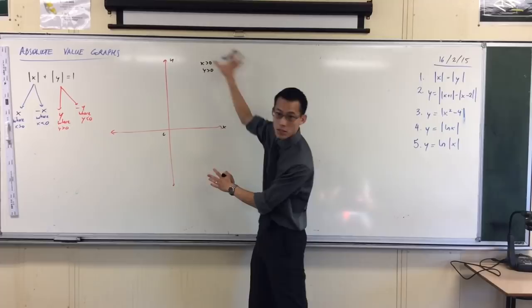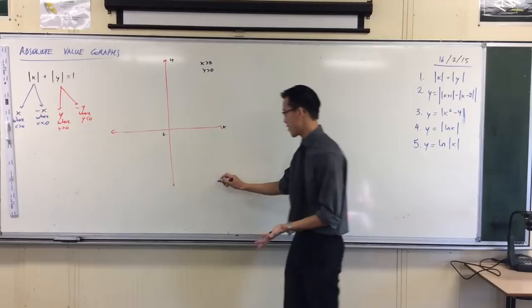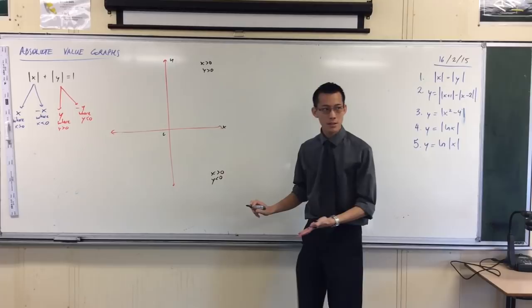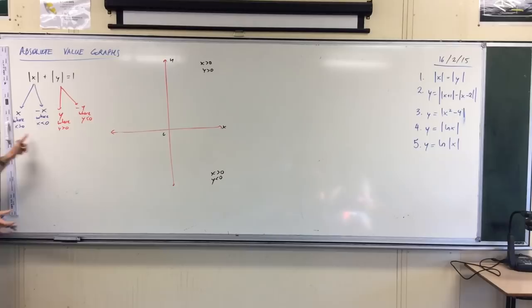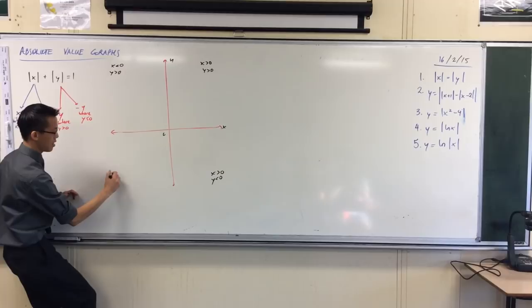In exactly the same way, over here, I still have x is positive, but now y is negative. Does that make sense? And then I can keep on going around. So four quadrants, four different descriptions of the inequality. So I'll just fill it out. I've got the negative case over here for x, and the negative case for y.